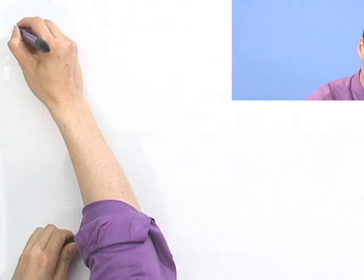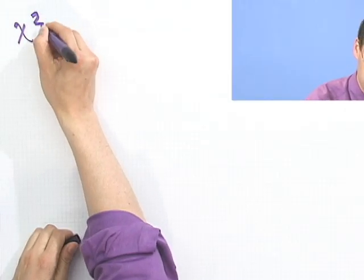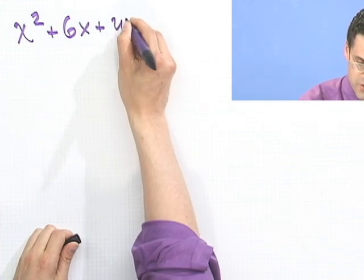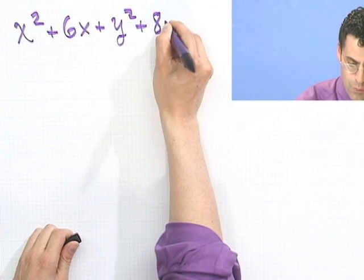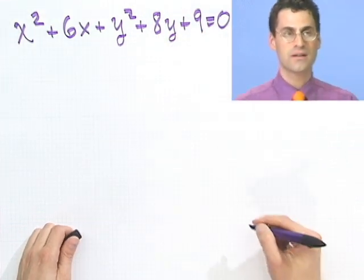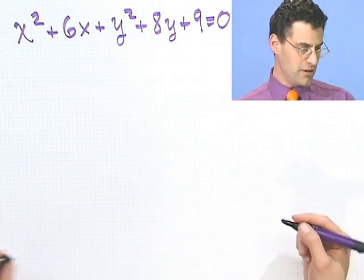For example, look at this. Suppose someone handed you x squared plus 6x plus y squared plus 8y plus 9 equals 0. Now, if someone handed that to you, what would you do? Well, you'd hand it back, of course, but what if someone handed it to you and said, OK, that's some circle,